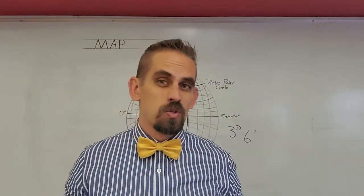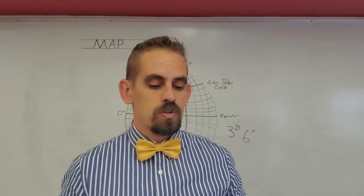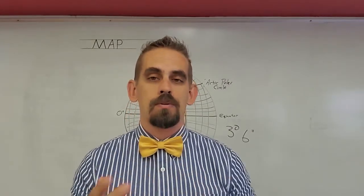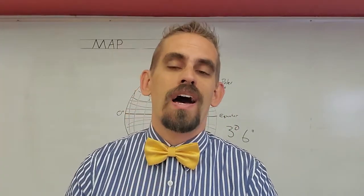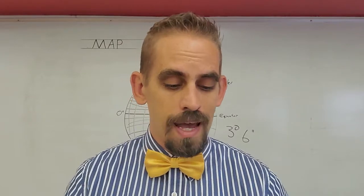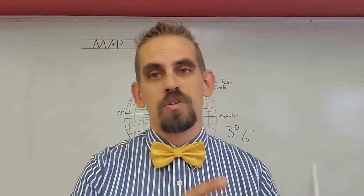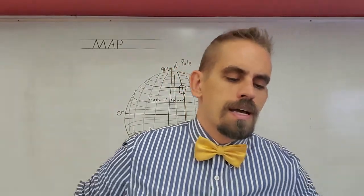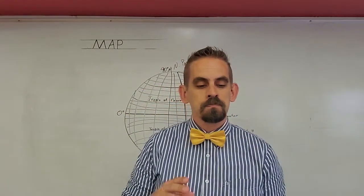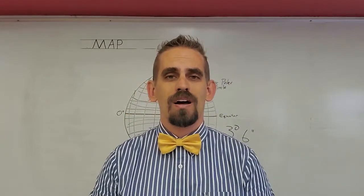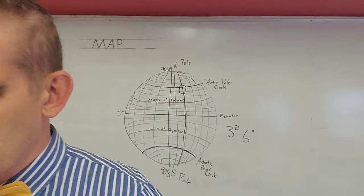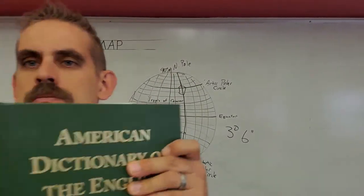You're going to take some of what you learned last lesson and then also what you're going to learn this lesson, and then you're going to be able to explain in your own words how you find the position of a place on a map or on a globe using latitude and longitude. Because first you need to define latitude.